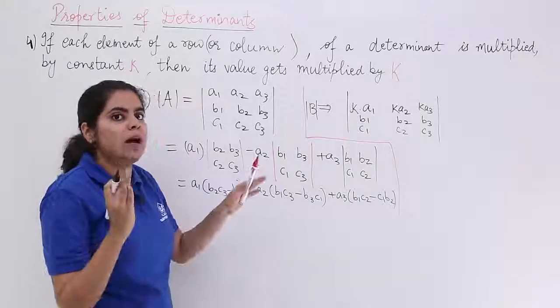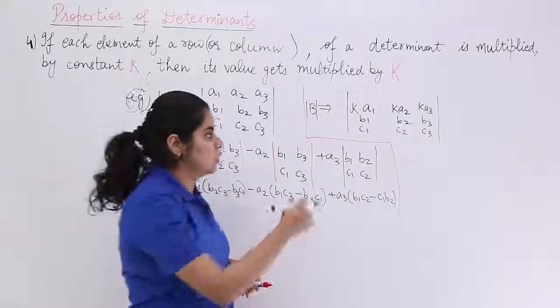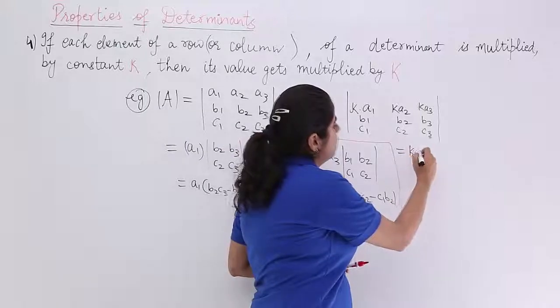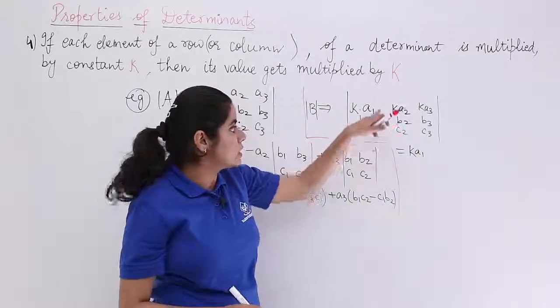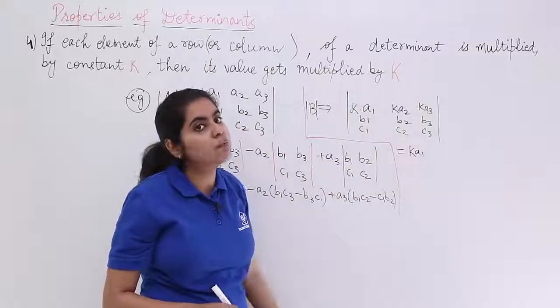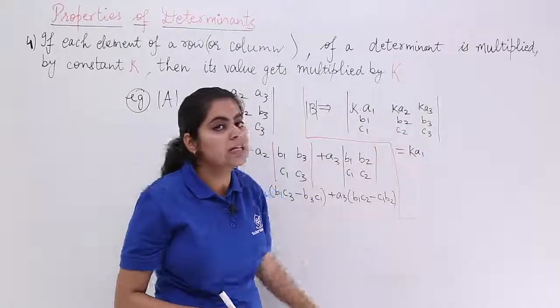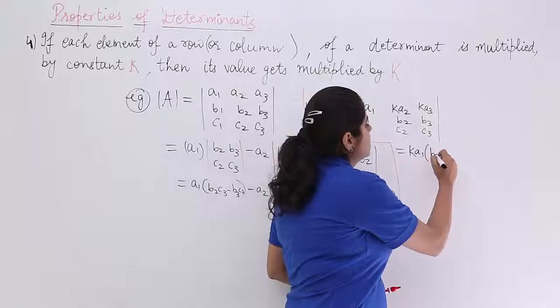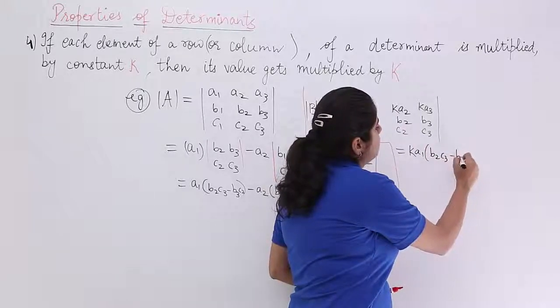This determinant has these entries. Now, again what you have to do is expand it along the row 1 and see the change. Expanding along the row 1 means what? Ka1 outside. This is your Ka1. Ignore the first row. Ignore the first column. What do you have? B2, C3, C2, B3. So, it is B2, C3 minus B3, C2.